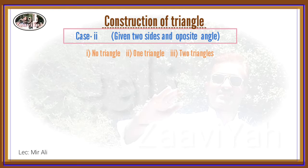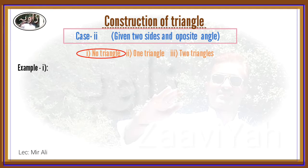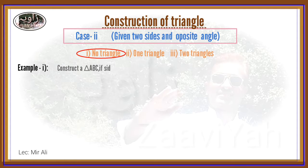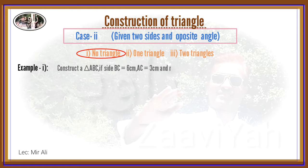First example: Construct a triangle ABC where side BC is equal to 6 cm, side AC is equal to 3 cm, and the measurement of angle B is equal to 120 degrees.